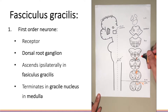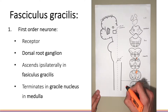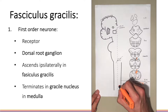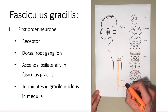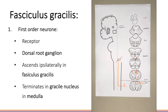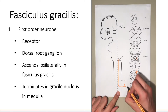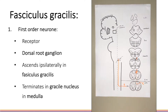It terminates in the gracile nucleus at the junction of the open and closed medulla. Here you can see the first order neuron entering the spinal cord via the dorsal root ganglion and ascending ipsilaterally in the cord before terminating in the gracile nucleus.